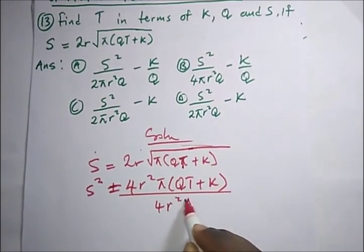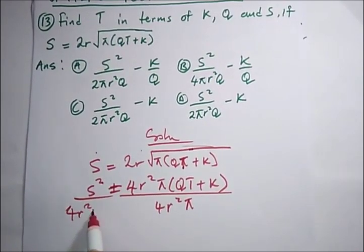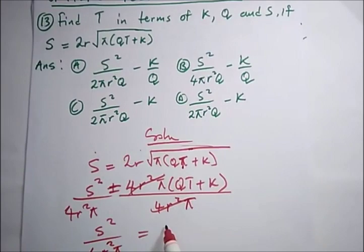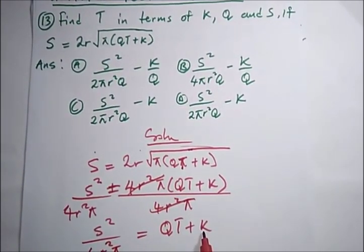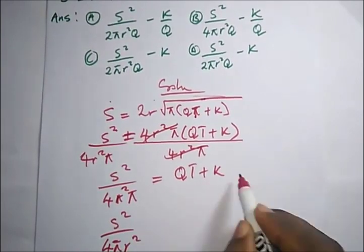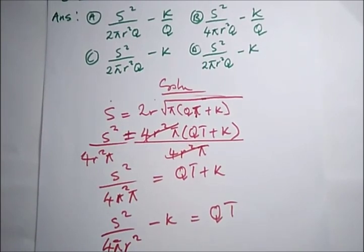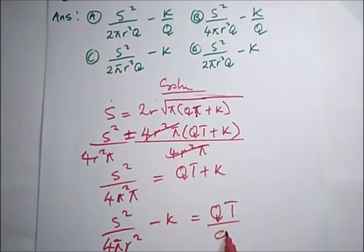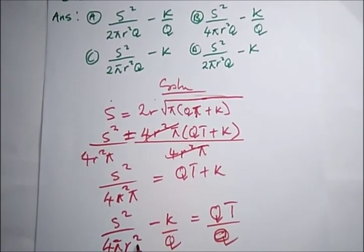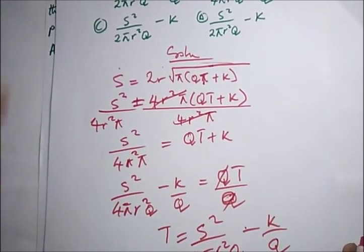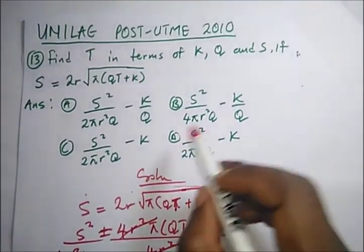Dividing both sides by 4πr²: s²/(4πr²) = qt + k. Moving k to the other side: s²/(4πr²) − k = qt. Dividing both sides by q: t = s²/(4πr²q) − k/q. The correct option is B.